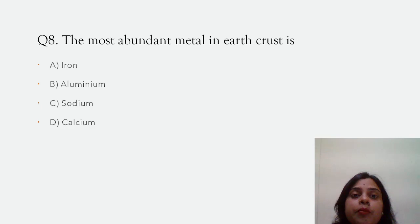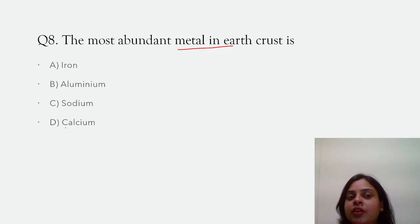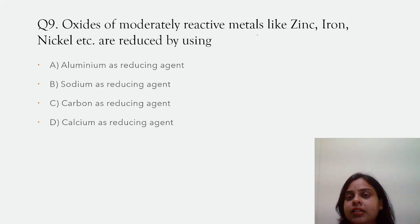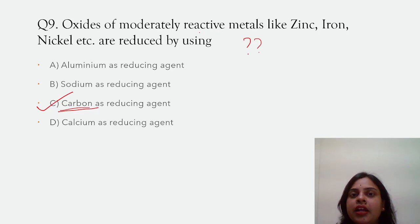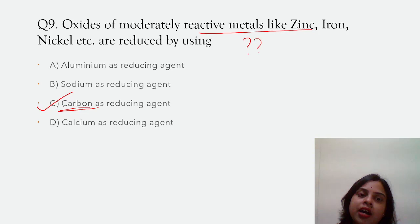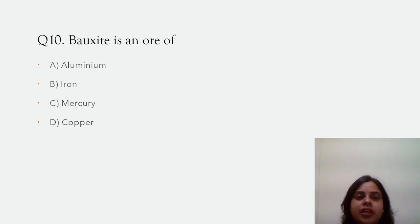The most abundant metal in earth's crust — the options are iron, aluminium, sodium, and calcium. The correct answer is aluminium. Next: oxides of moderately reactive metals like zinc, iron, nickel, etc., are reduced by which process? The options are aluminium as a reducing agent, sodium as a reducing agent, carbon as a reducing agent, or calcium as a reducing agent. The correct answer is carbon. These are moderately reactive metals and they can be reduced by using carbon as a reducing agent.